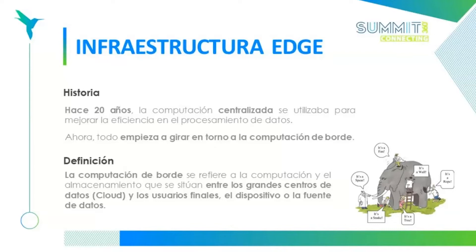Ahora hay una tendencia nueva que no tiene una definición clara todavía. Les pongo la paradoja de los no videntes con el elefante: varios no videntes tocan un elefante y uno toca una oreja y dice que es un ventilador; otro toca el colmillo y dice que es un punzón; otro toca la trompa y dice que es una serpiente; otro toca el pie y dice que es un árbol; otro toca el cuerpo y dice que es una pared; y otro toca la cola y dice que es una cuerda.